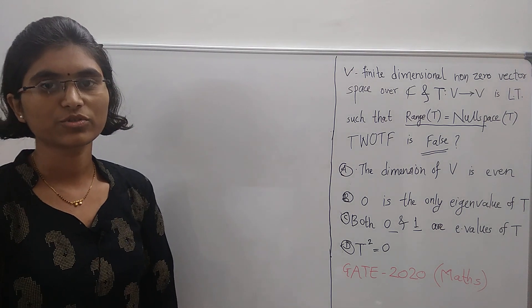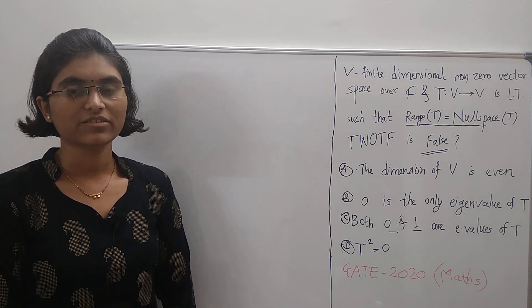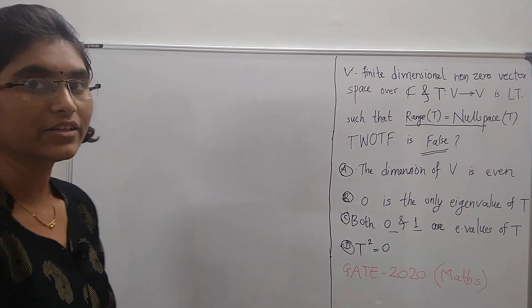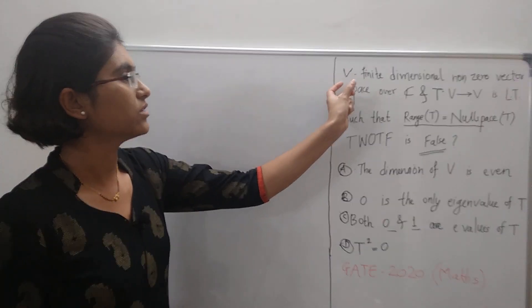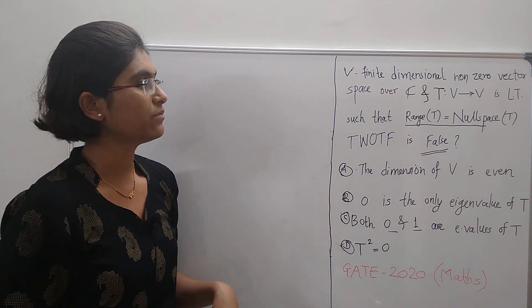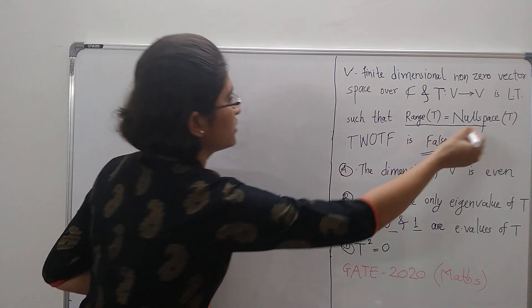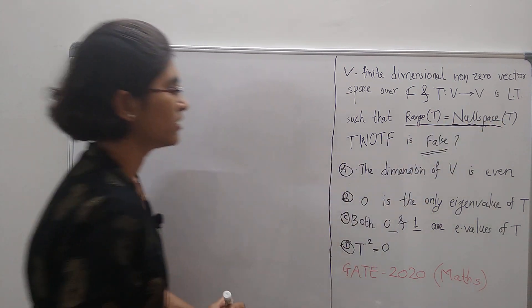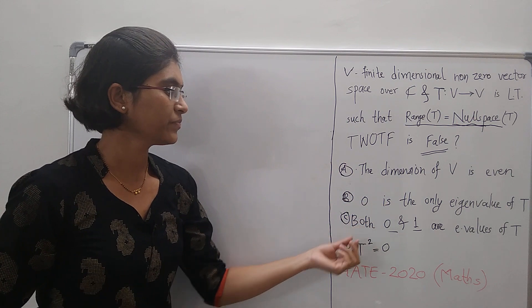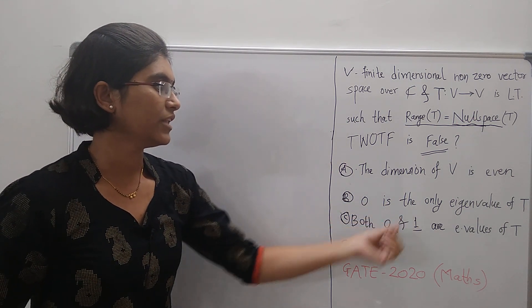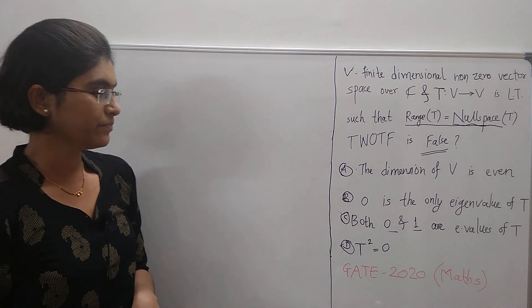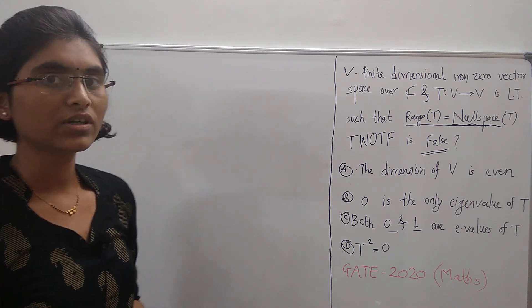Hello friends, welcome to UGPG Mathematics. In this video, I am going to solve problems from Gate 2020 Mathematics. The question is: we have given V, a finite dimensional non-zero vector space over C, and T is a linear map from V to V such that range of T is equal to null space of T. Then which of the following is false? Option A: the dimension of V is even. Option B: 0 is the only eigenvalue of T. Option C: both 0 and 1 are eigenvalues of T. Option D: T squared is equal to 0.